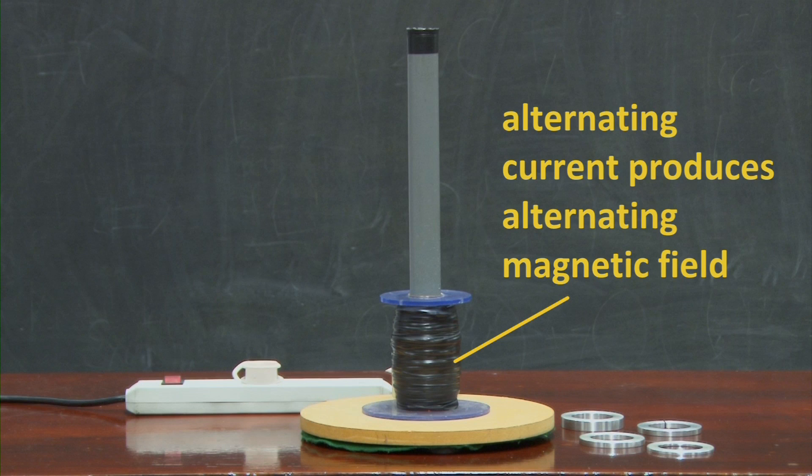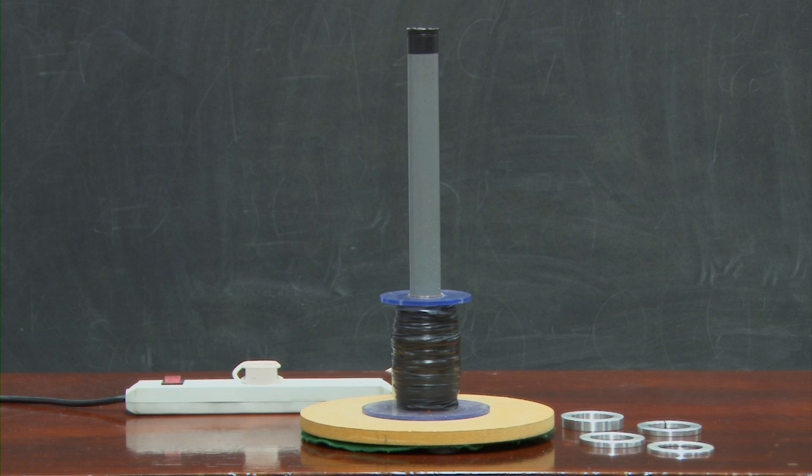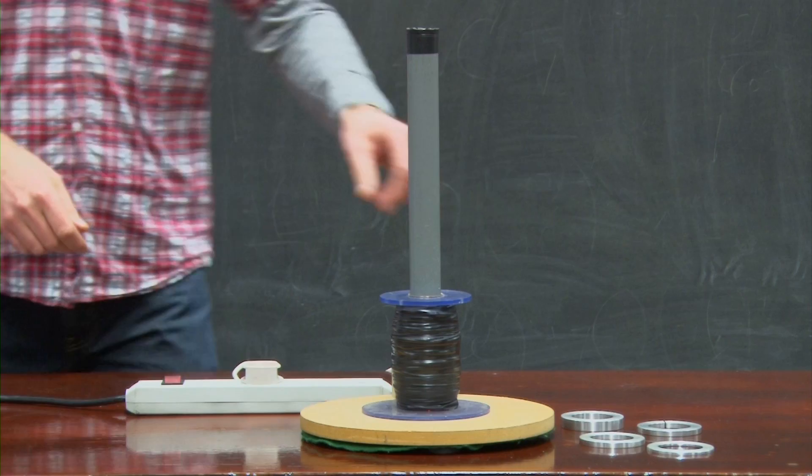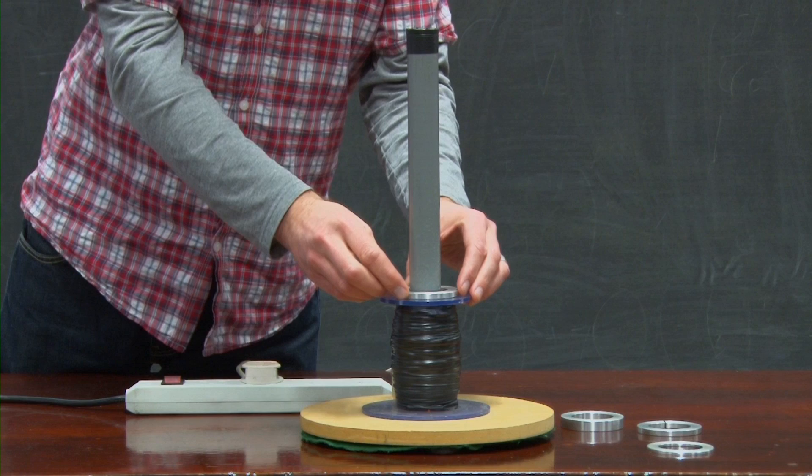Now, for a more dramatic demonstration of Faraday's law and the effects of Lenz's law. When the current is switched on, a magnetic field is produced that induces a current to flow in the aluminium ring.